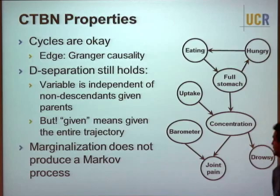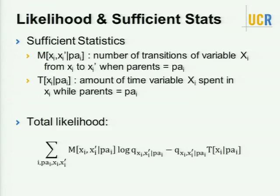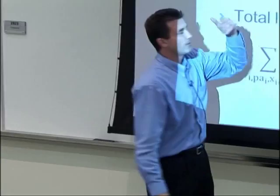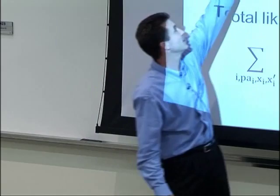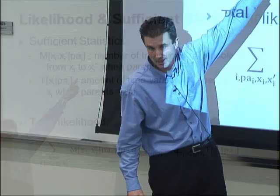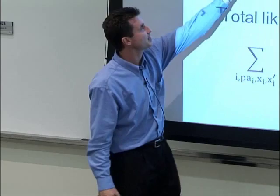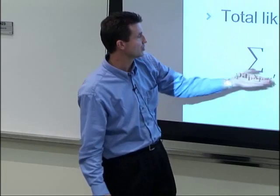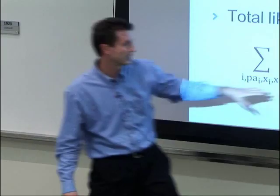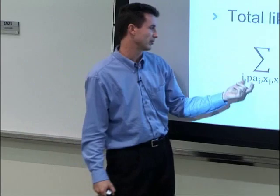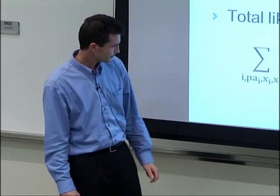A CTBN is a member of the exponential family. The sufficient statistics are: for each variable, for each value its parents can take, for each pair of values the variable can take (x_i, x_i'), the number of transitions from x_i to x_i' while parents had value p_i; and the amount of time the variable spent in state x_i while parents were in state p_i. These give a linear form in the sufficient statistics and parameters.